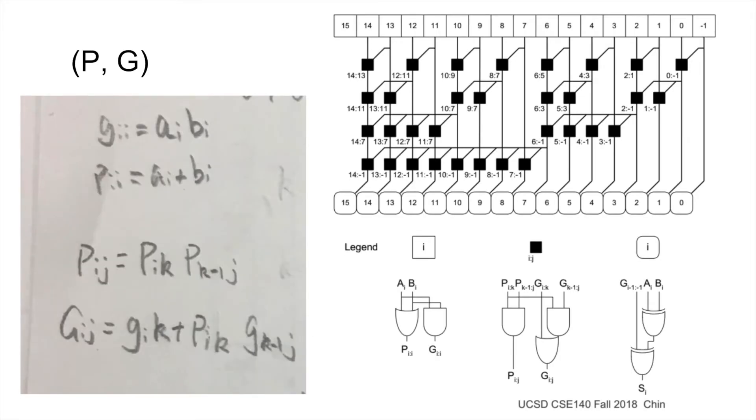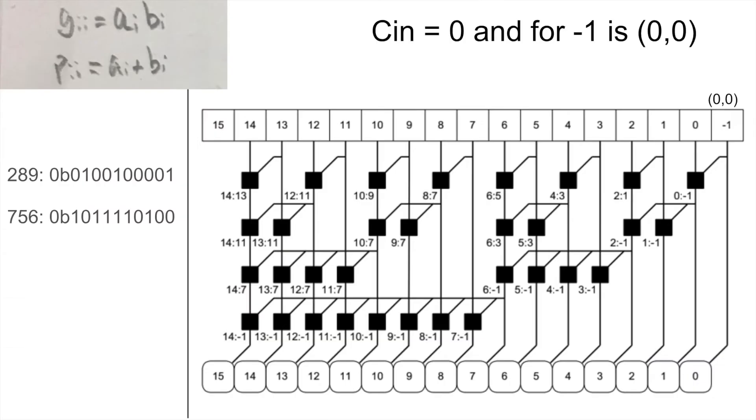There are some things you need to calculate. Based on the schematic you will understand that the pij equals to the pik and pk-1j, and the gij equals to the gik or with the pik gk-1j. And then for the gii and the pii, they're the calculation of the bits from the inputs, basically in this case the 289 and the 756. The g are the and of the bits, and then the p is the or of the bits.